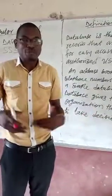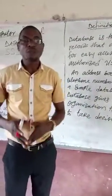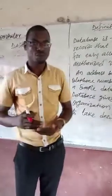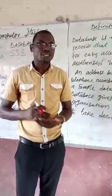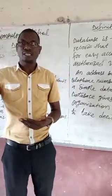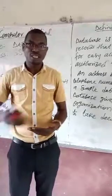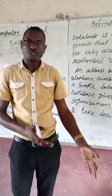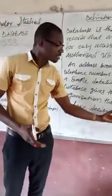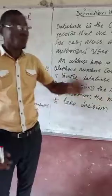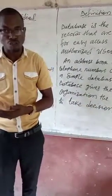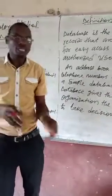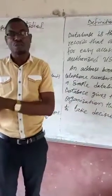The database gives the manager of an organization the information required to take decisions at the appropriate time. There is no way management of an organization can take a decision without appropriate information — it is from the database that they will retrieve records and take decisions. For example, in a boarding school, if they want to cook food for students, they first need to know the number of students, so they can determine the right quantity of food to prepare.